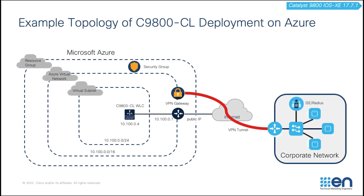Here is the example topology of Catalyst 1900 CL deployment on Azure. A resource group is created that contains all the resources for this deployment. A virtual network and a subnet is created for the VM to be attached. A network security group is created to give inbound and outbound rules for the VM. A management VPN is created for traffic transmitted between the Azure virtual network and a corporate network. Finally, a Catalyst 1900 CL is created in the virtual subnet for managing the APs in the corporate network through the management VPN.